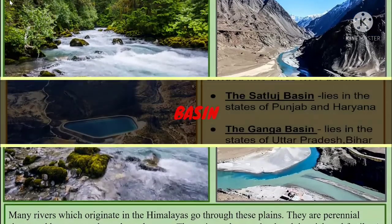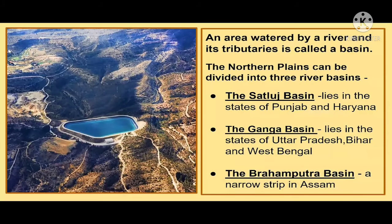Let's talk about a basin and the division of the Northern Plains. An area watered by a river and its tributaries is called a basin. The Northern Plains can be divided into three river basins: the Satludj basin, which lies in the states of Punjab and Haryana; the Ganga basin, which lies in Uttar Pradesh, Bihar and West Bengal; and the Brahmaputra basin, a narrow strip in Assam.